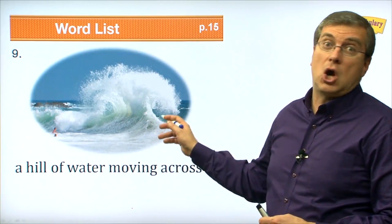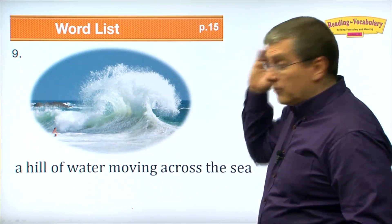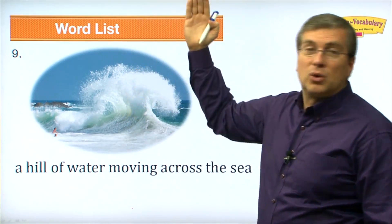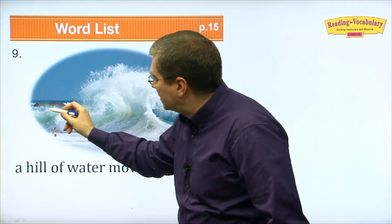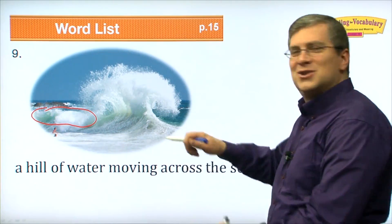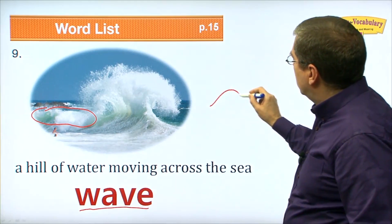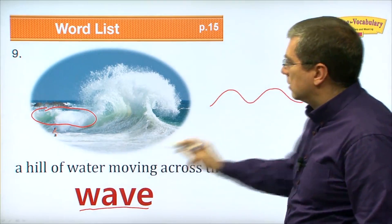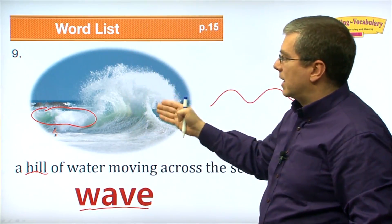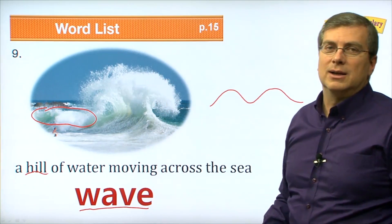Number nine. That is not calm — it's exciting, it's violent, it's got a lot of energy. A hill of water moving across the sea — we call it a wave. Waves move through the water like hills, and surfers ride them. This big wave here is where the wave breaks when it hits land or rocks. Waves don't usually look like this; they only do this when they hit something. That's a very unusual and unique picture.